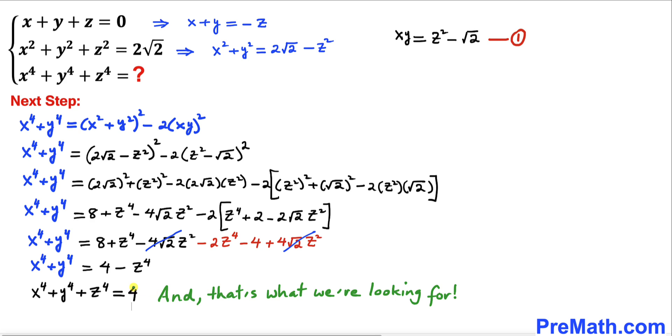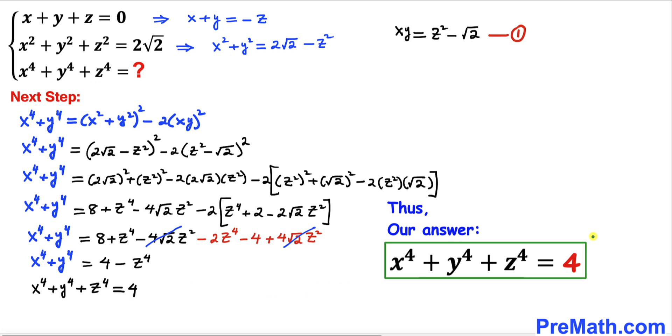Therefore the value of x to the power 4 plus y to the power 4 plus z to the power 4 equals 4. And that's our final answer.